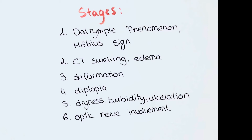In the second stage, the connective tissue of the eye is involved. This is seen by swelling of the lid, edema of the conjunctiva — which can lead to the elevation of the conjunctiva over the level of the sclera — as well as photophobia and increased lacrimation.